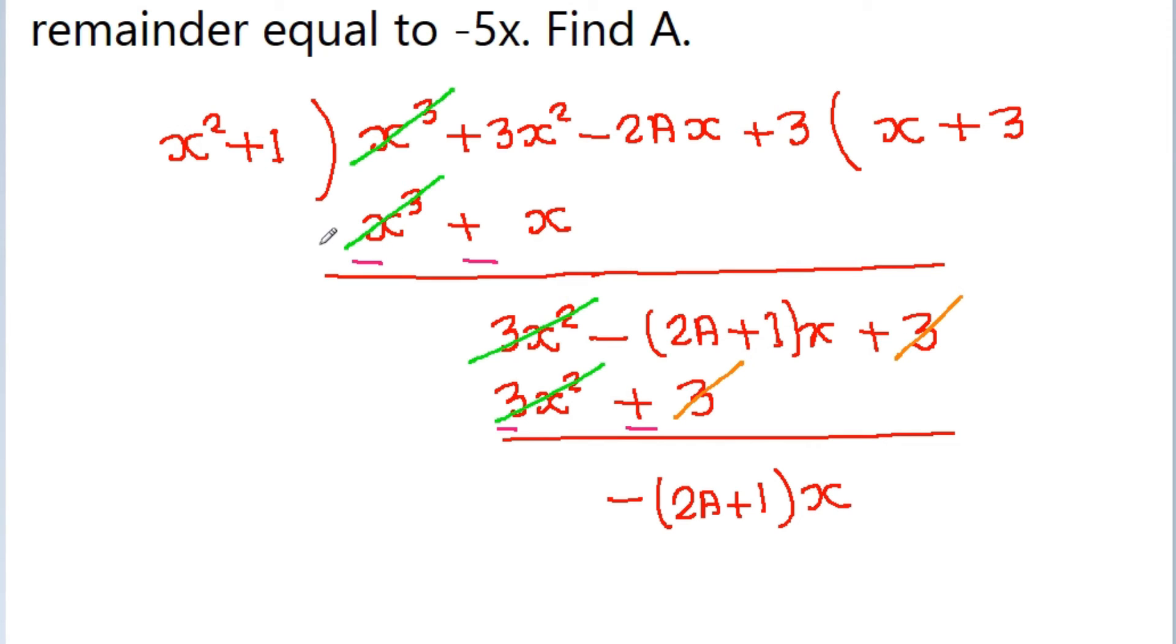So by manually dividing, we get a remainder of minus 2A plus 1 times x, and here the remainder is given as minus 5x, so these two must be equal.